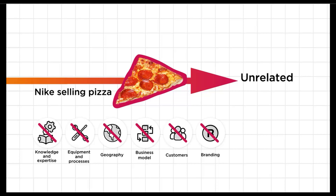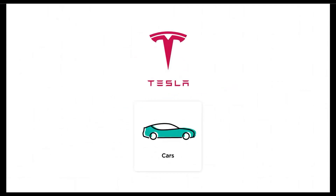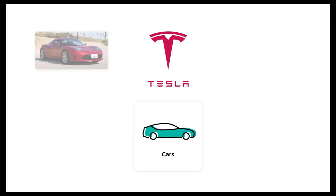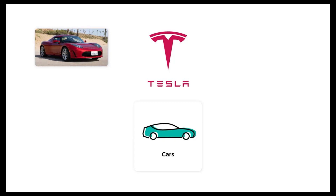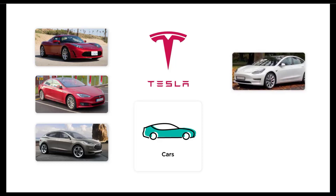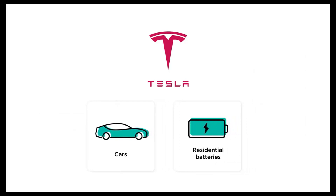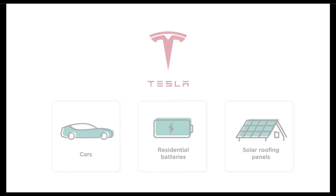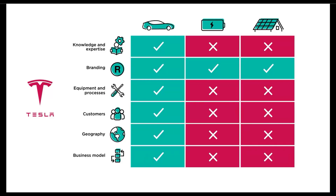So now let's look at different recent diversification moves and think about how they were related and unrelated. Let's take Tesla. Tesla started out making a super premium electric sports car called the Roadster, which was sold directly to customers on a waitlist and then personally delivered. It then expanded into the luxury electric cars Model S and Model X sold through its own network of dealerships, and then into the near luxury Model 3 and Model Y also sold through its own network of dealerships, and then into residential batteries and solar roofing panels sold direct. All of the businesses share the same Tesla brand, and all of the electric car businesses share some underlying expertise, equipment and processes.